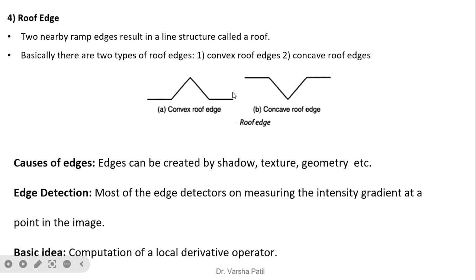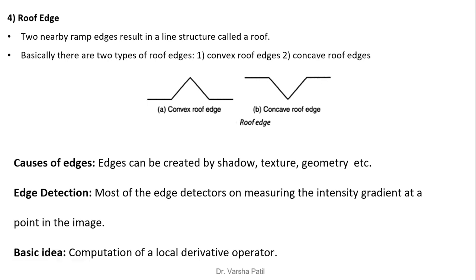A roof edge results from two nearby ramp edges forming a line structure. There are two types of roof edges: convex and concave. Edges in an image can be created by shadows, textures, and geometry when a picture is captured.